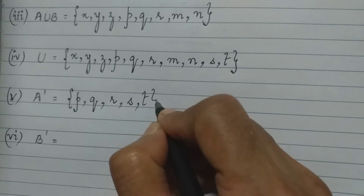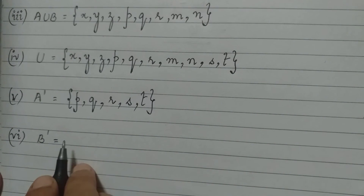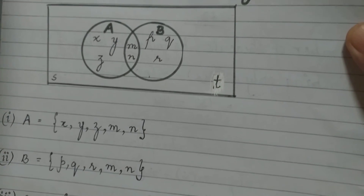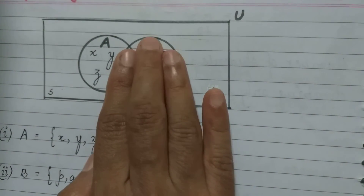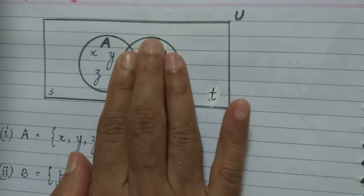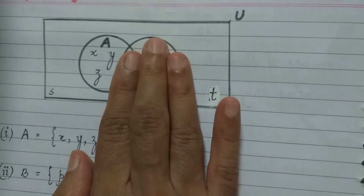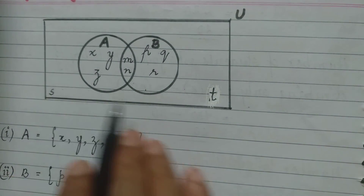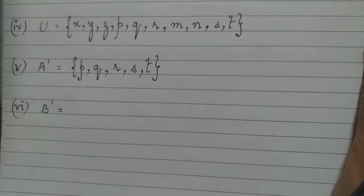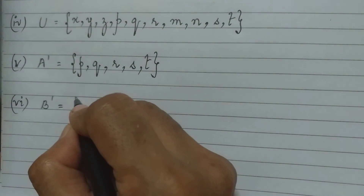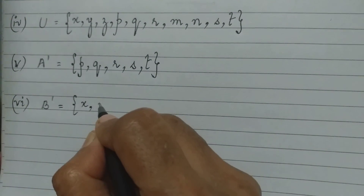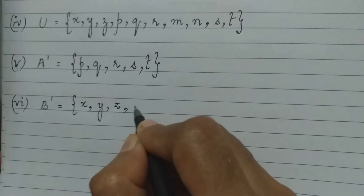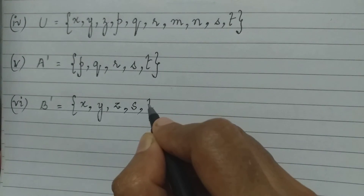Lastly, when I write B dash or B complement, I close set B and look at the remaining elements in the universal set. That will include the elements X, Y, Z, S, and T. So B dash or B complement will have the elements X, Y, Z, S, and T.